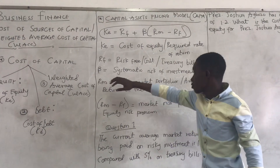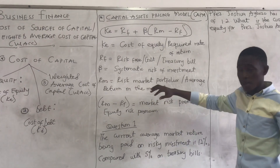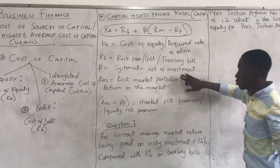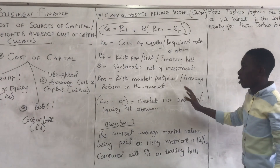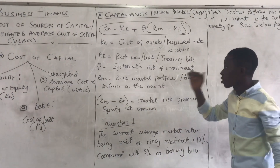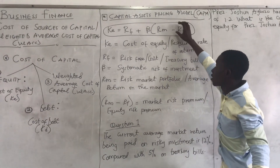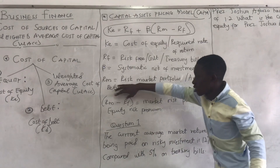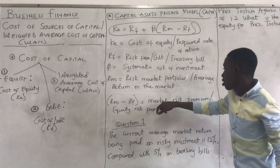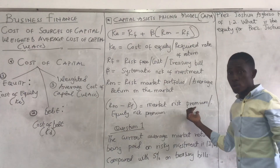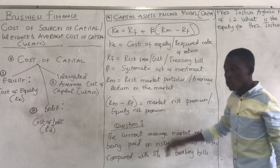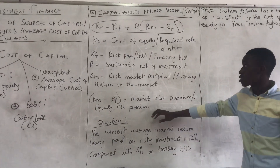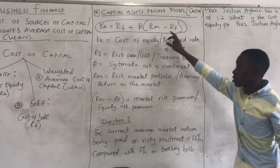Beta represents the systematic risk of the investment. RM stands for the risk market portfolio, or the average return on the market. We may be given RF, or we may be given the whole bracket (RM minus RF) — that is called the market risk premium or equity risk premium. So when you see market risk premium or equity risk premium, it represents that difference (RM minus RF).